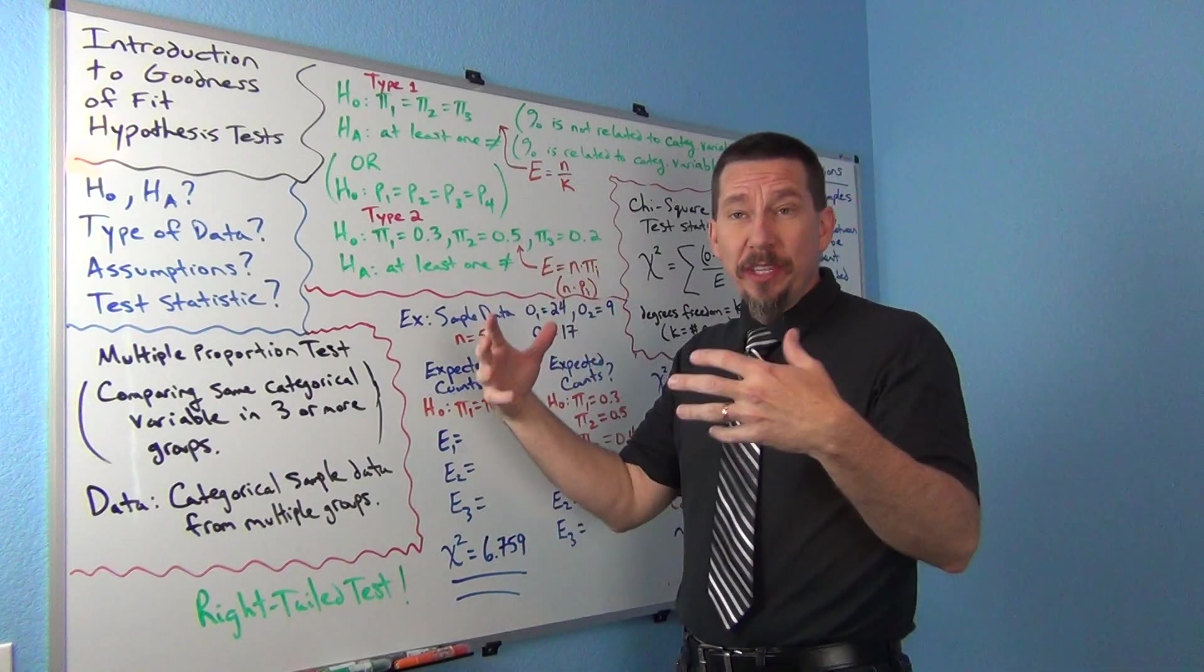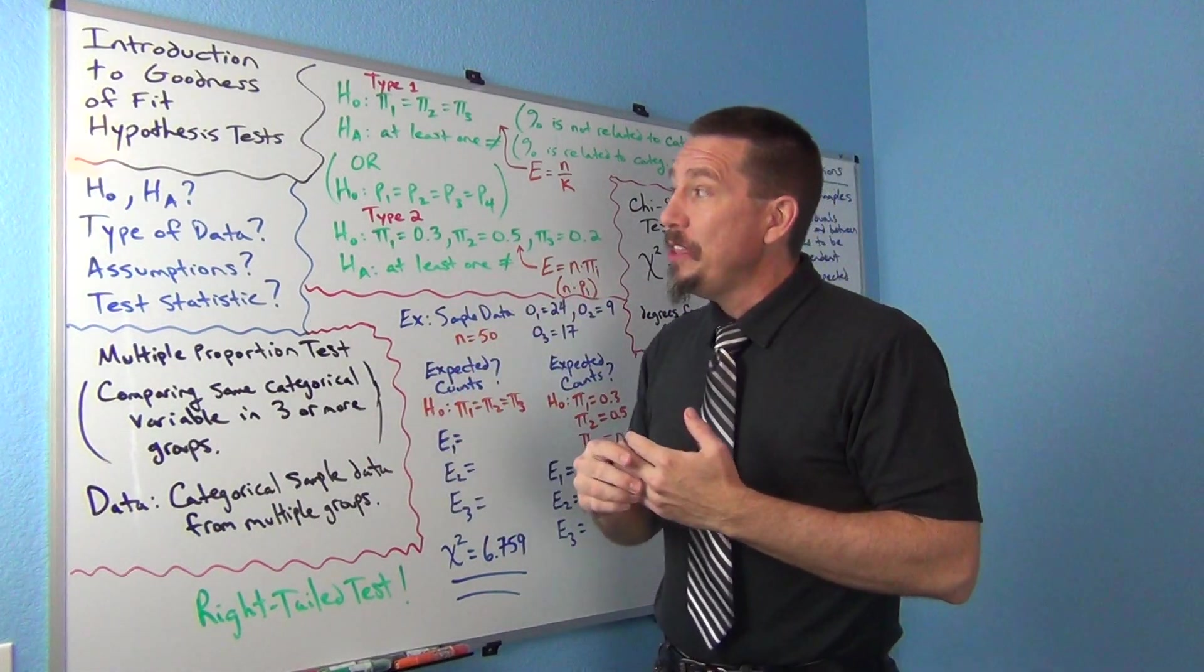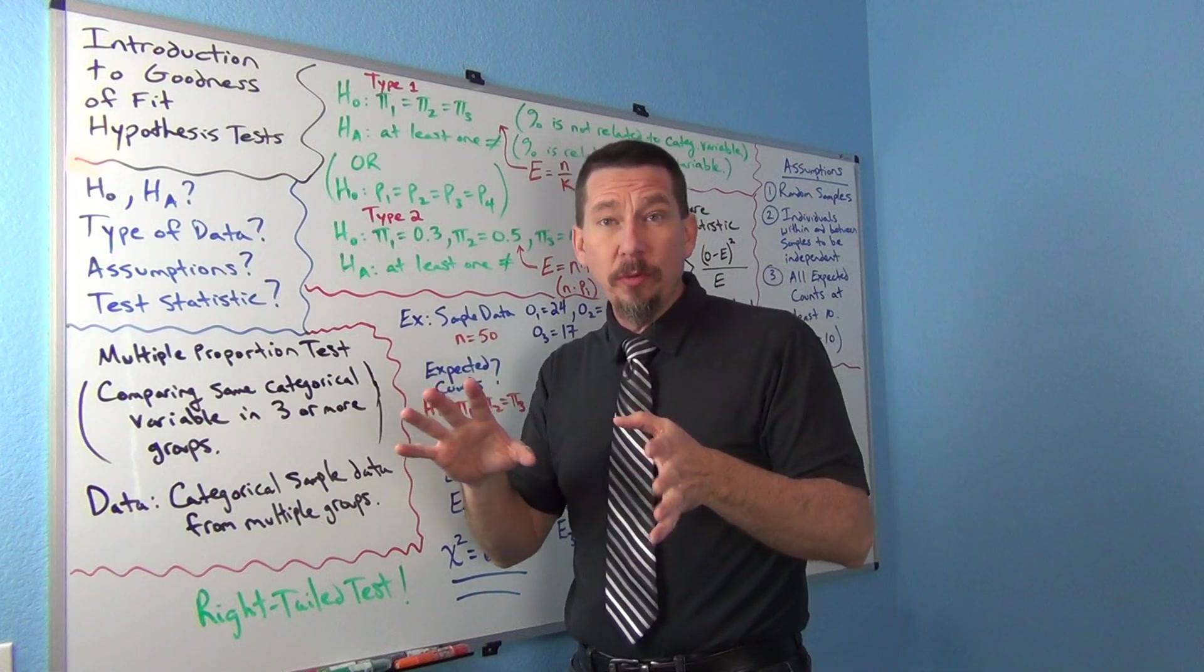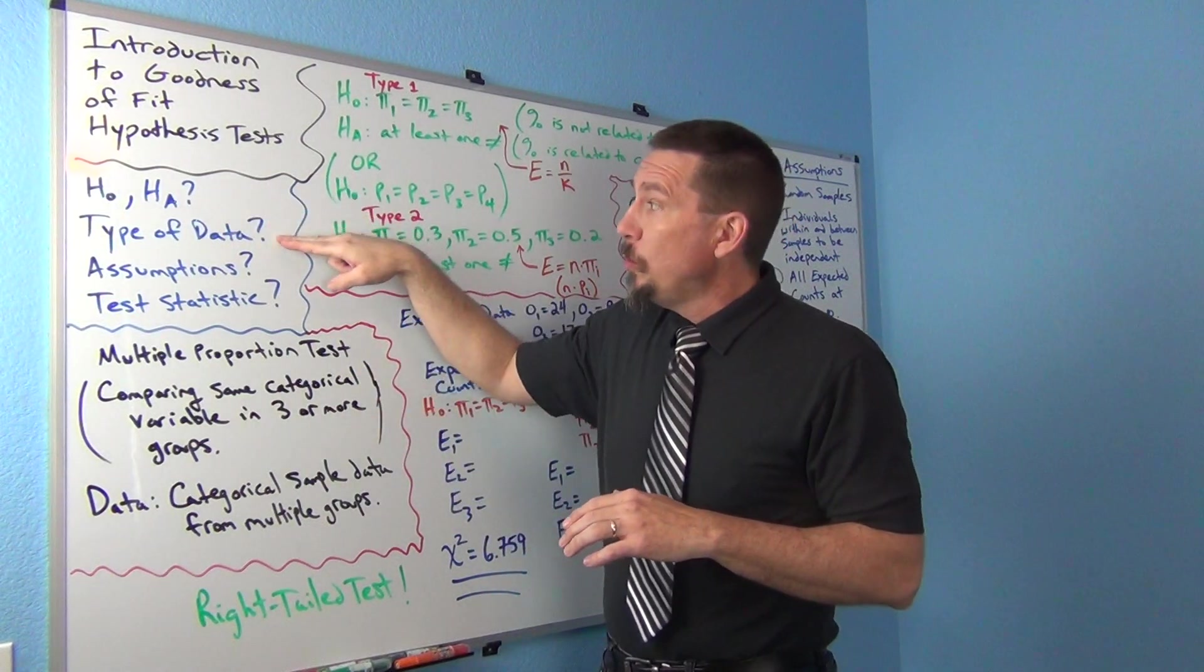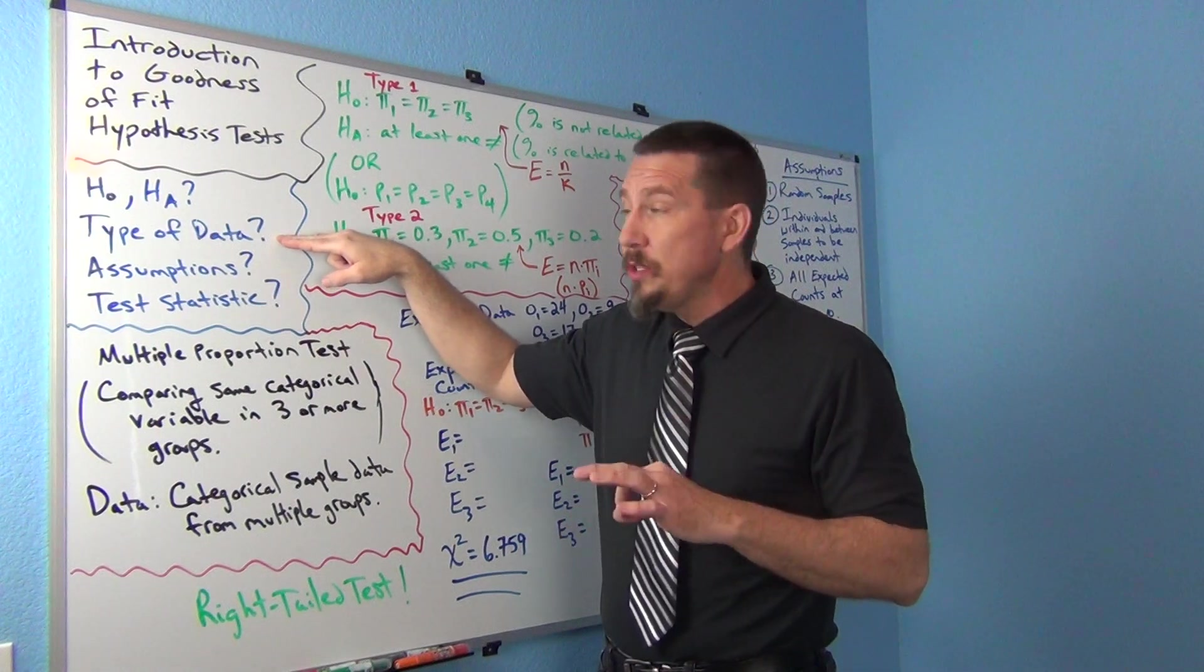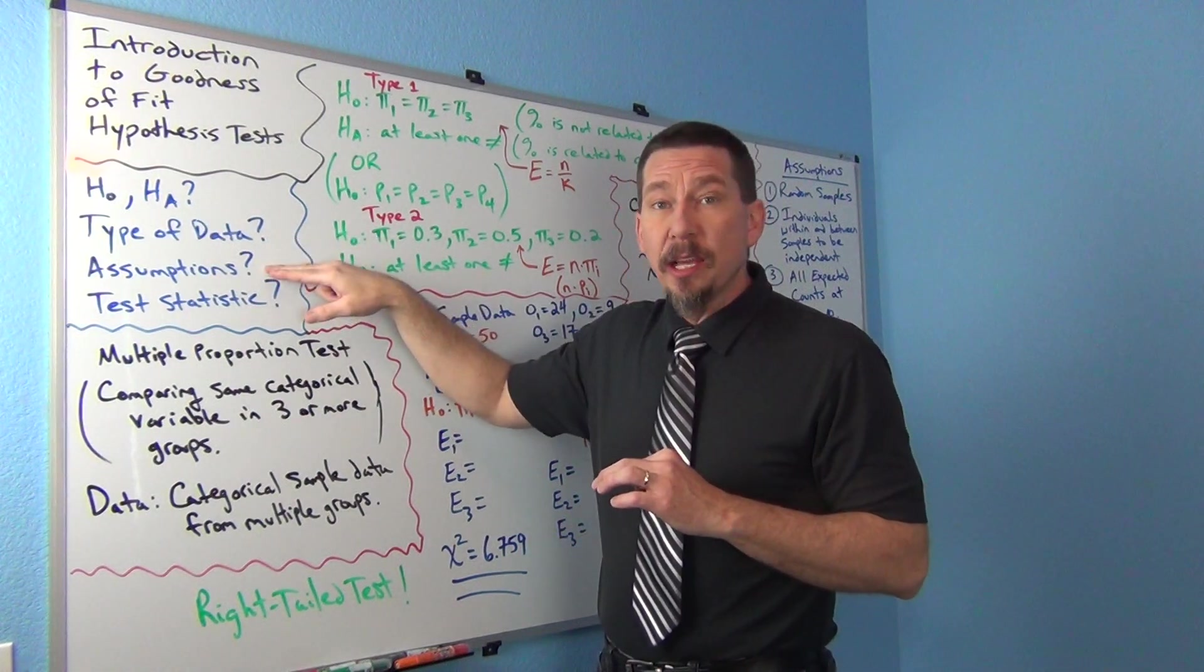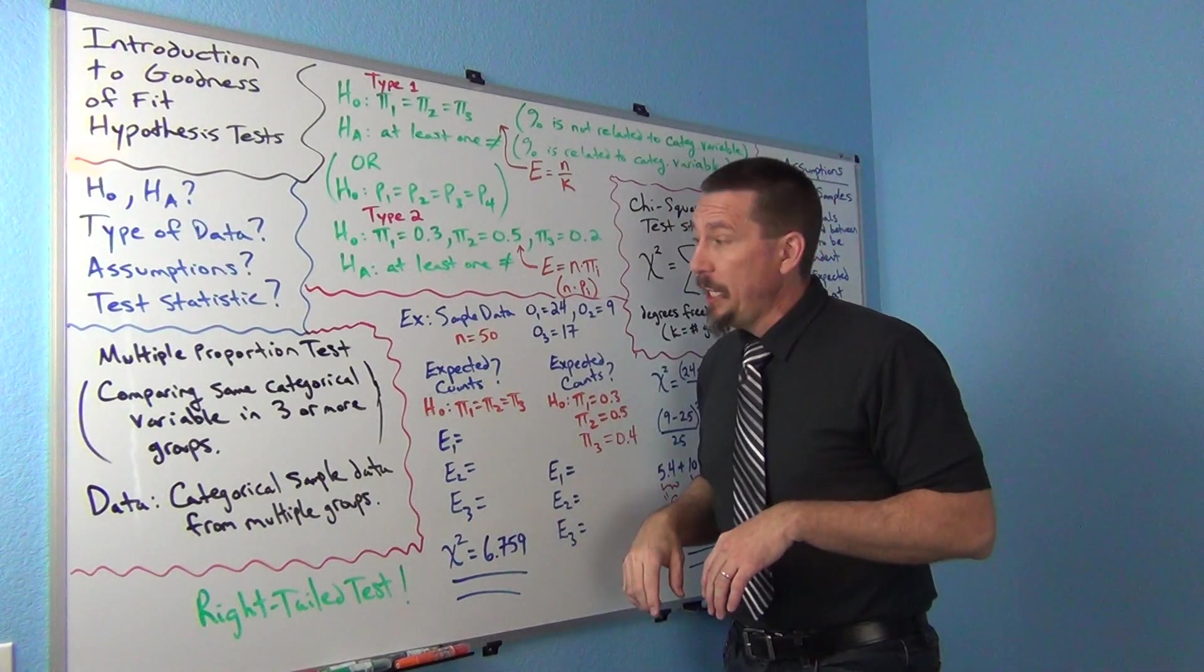As we've been going through these more advanced tests, there are four things we've been focusing on when we introduce them: What's the null and alternative hypothesis? What type of data do we need to do this test? What are the assumptions? And what's the test statistic look like?